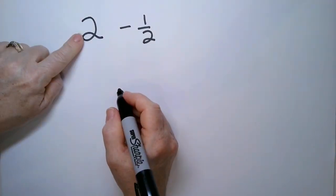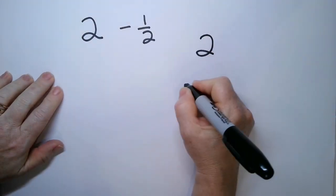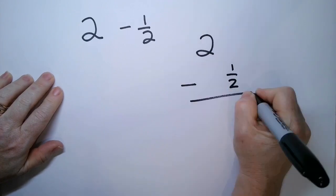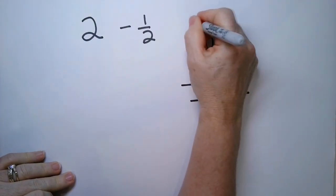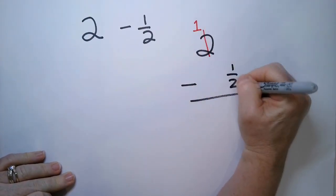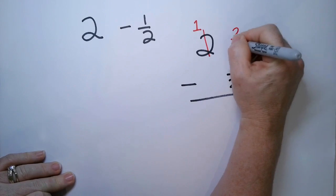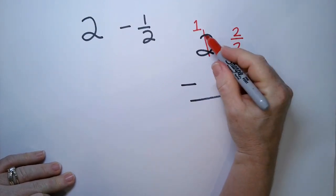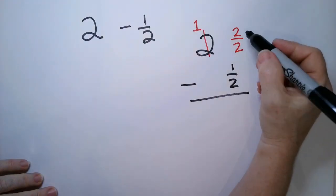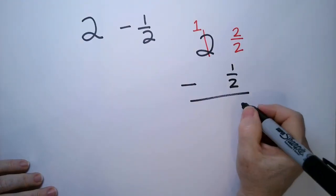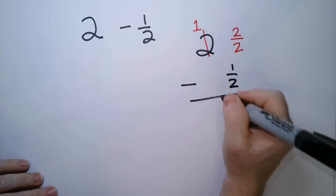So this two minus a half, well you can't take a half from nothing. So what I'm going to do is I'm going to borrow one and then the denominator is a two. So I'm going to put a two over two. That's where the one went that I borrowed. Now we have more than enough. We have two over two minus one over two so that's one half and then we have a one.